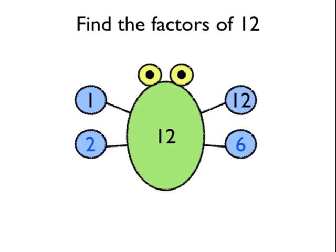Are there any more? Yes, there are. 3 times 4 makes 12. So again, you've got 3 and 4 as feet for the factor bug. Are there any more?